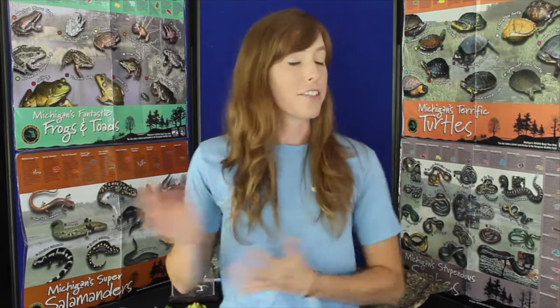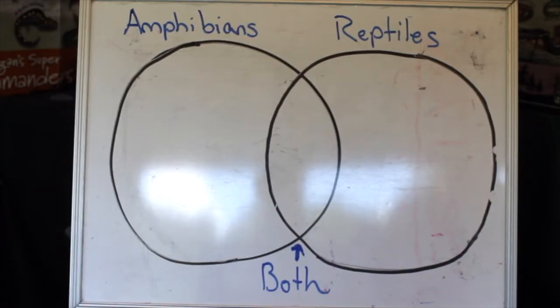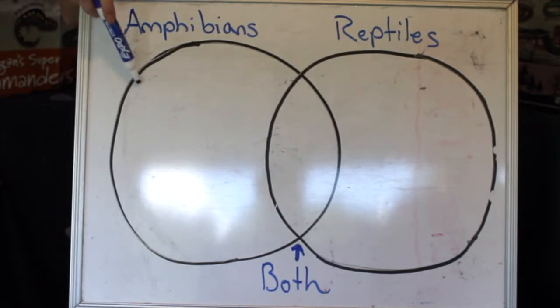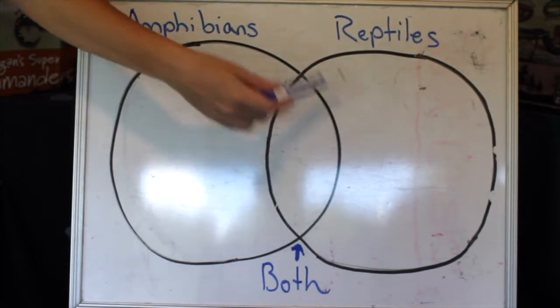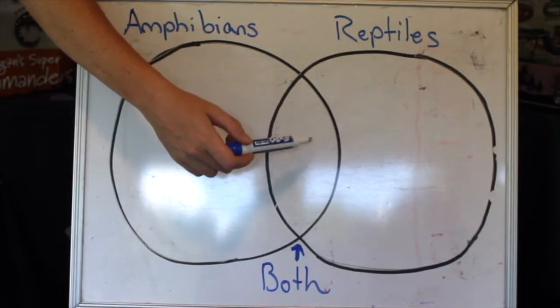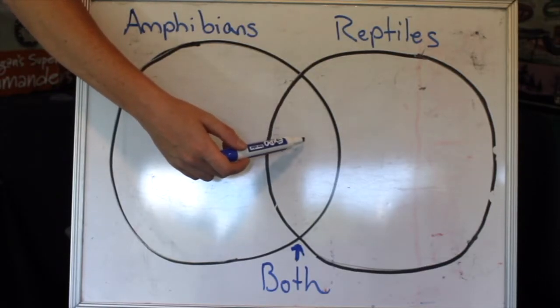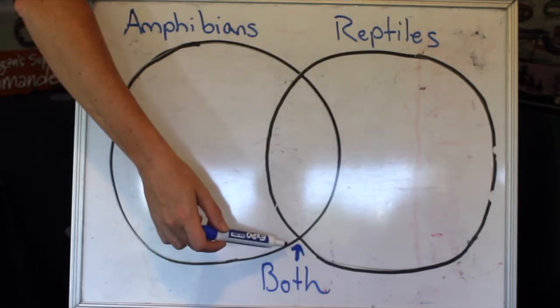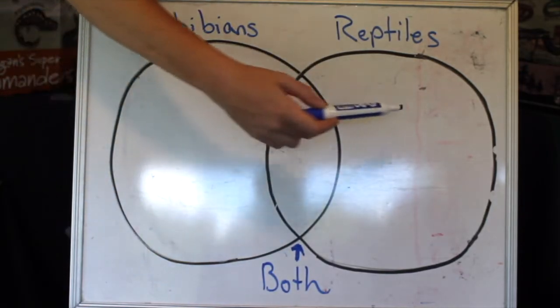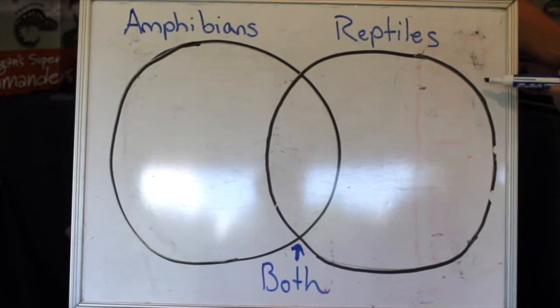One of the best tools we can use to help understand the similarities and differences between reptiles and amphibians is something called a Venn diagram. A Venn diagram allows you to look at multiple groups and categorize how they differ and how they're similar. Each circle represents what you are studying, and when the circles intercept, they leave a space where both circles come together — that area is where you place what your groups have in common.